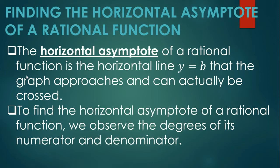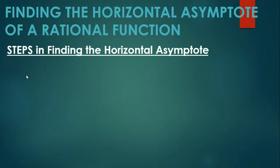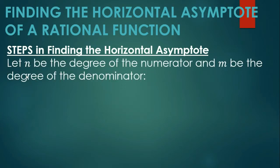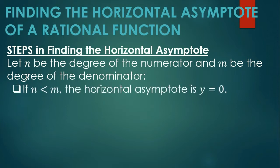Para mahanap yung horizontal asymptote, we focus our attention first sa degree or yung highest exponent ni numerator at ni denominator. Here are the steps in finding the horizontal asymptote. Let n be the degree of the numerator and m be the degree of the denominator. If n is less than m, the horizontal asymptote is y is equal to zero. Kapag mas maliit daw yung degree ni numerator kesa kay denominator, yung horizontal asymptote ay yung line y is equal to zero.